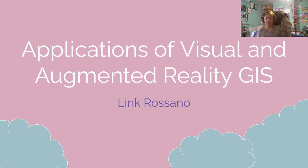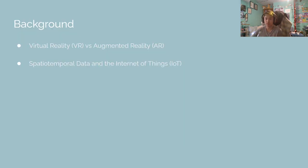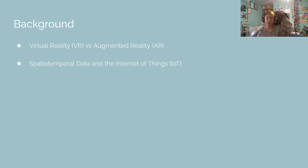Applications of Visual and Augmented Reality GIS by Link Rossano. Virtual reality refers to a 3D environment that can be interacted with by a person wearing specific equipment. By contrast, augmented reality combines real-world settings with virtual content. Both have been increasingly popular, especially for video games. As virtual reality and augmented reality gain popularity once again, the conversation turns to expanding uses of both tools.